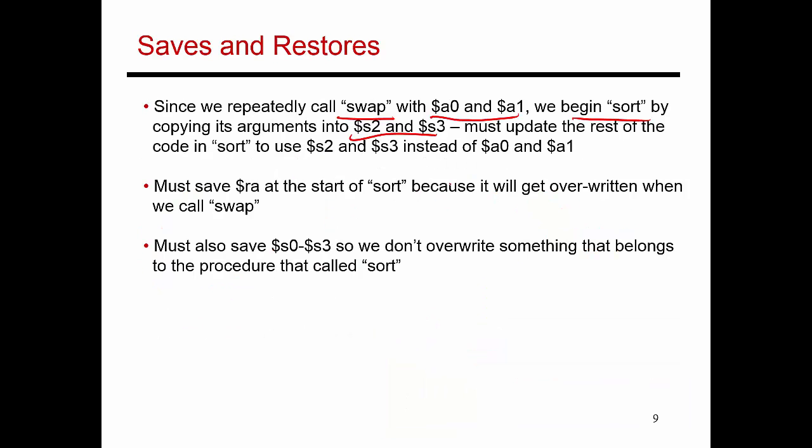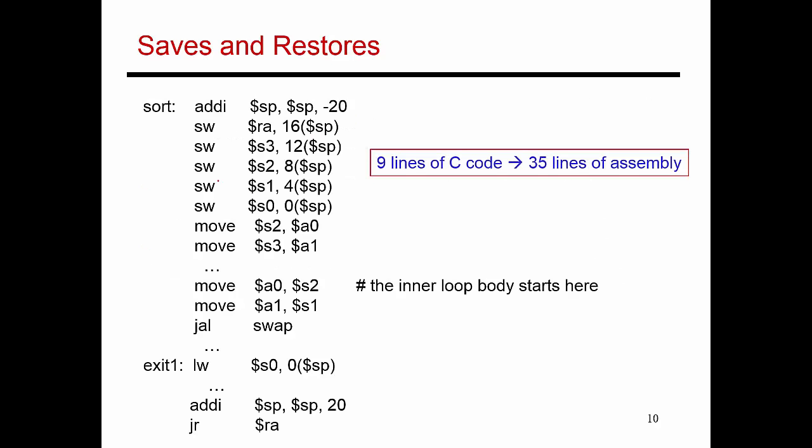In addition to that, $ra has to be copied repeatedly every time I invoke the procedure swap. So instead, I'll just save the value of ra as soon as I enter procedure sort. This is how the procedure sort begins. It's going to save a bunch of stuff onto the stack. It starts by saving the return address onto the stack. Then it's using registers s0, s1, s2, and s3. These are registers that might also be in use within the procedure that called the sort procedure. So before I override those values, I have to save the current contents of registers s0, s1, s2, and s3 onto the stack. Then I copy my input arguments a0 and a1 into registers s2 and s3, and from that point on, I'm just going to be using s2 and s3.